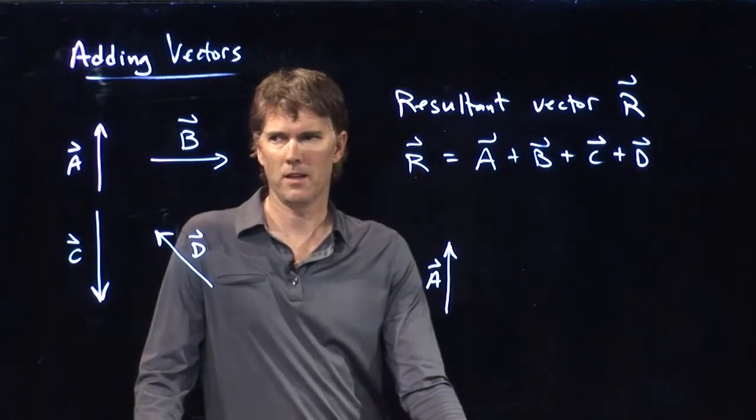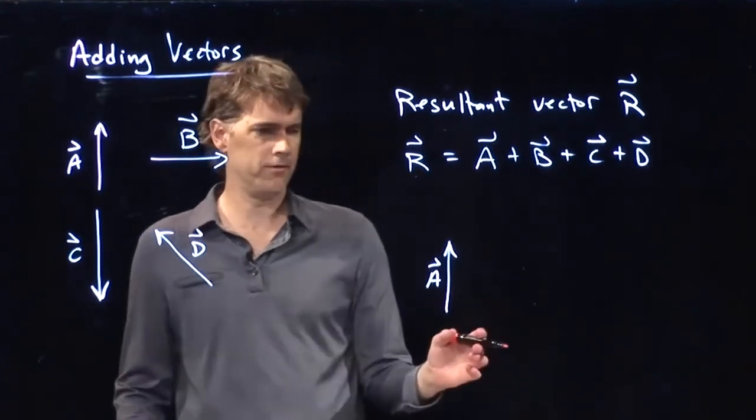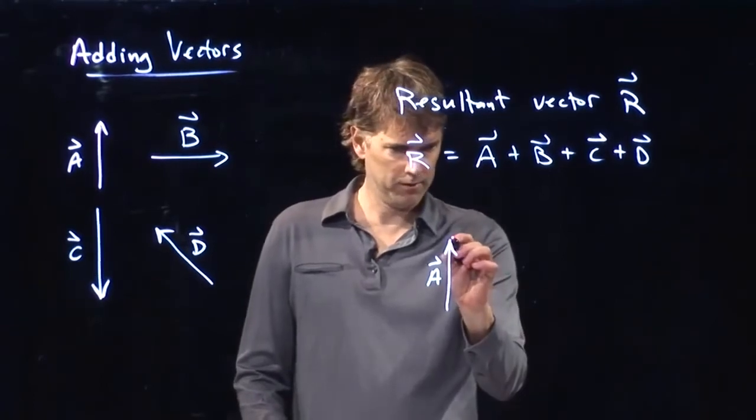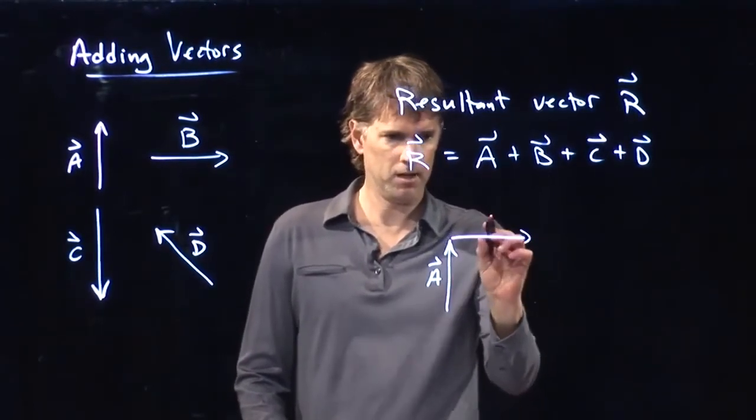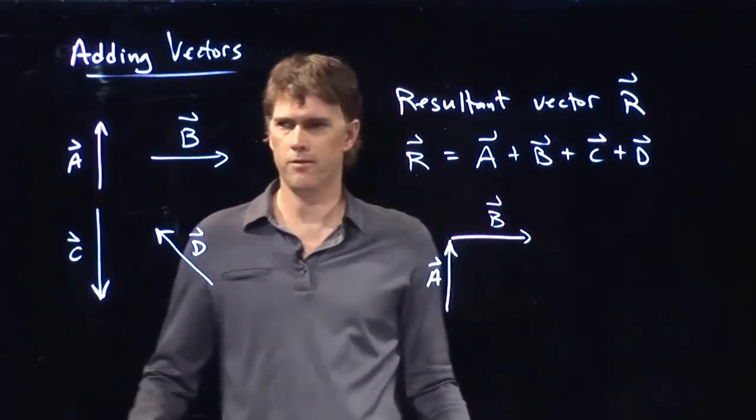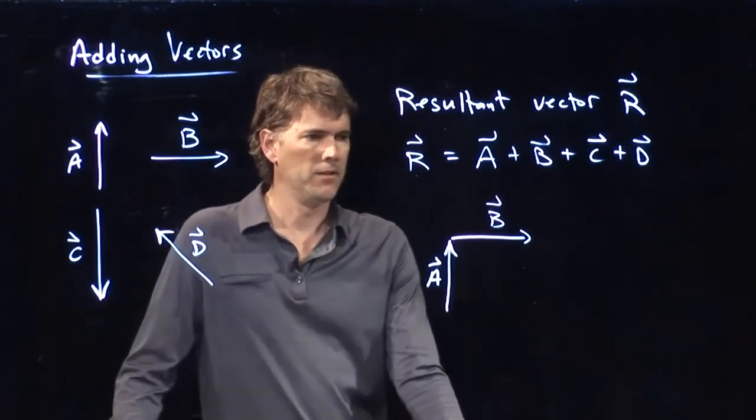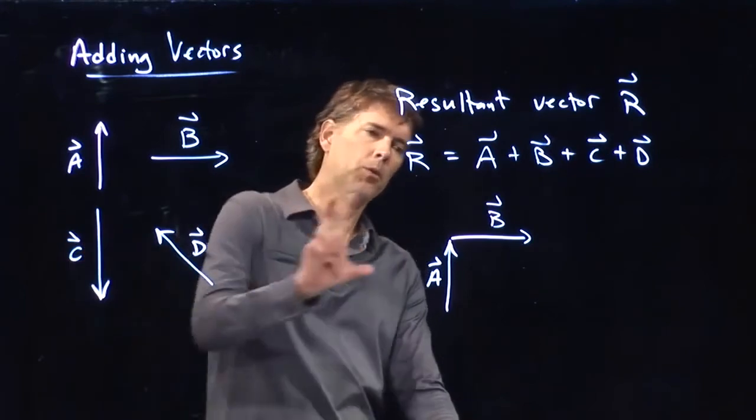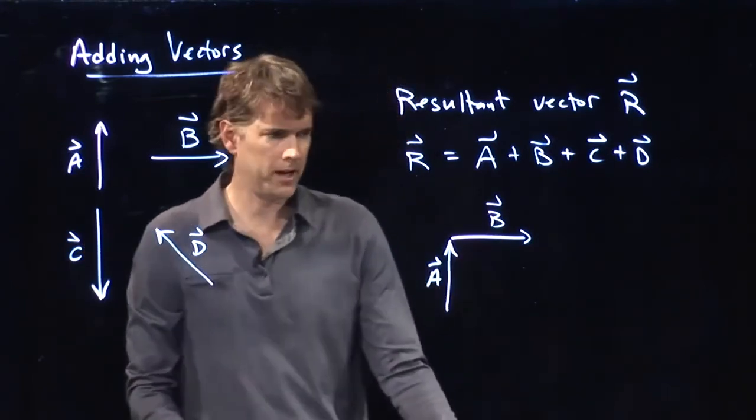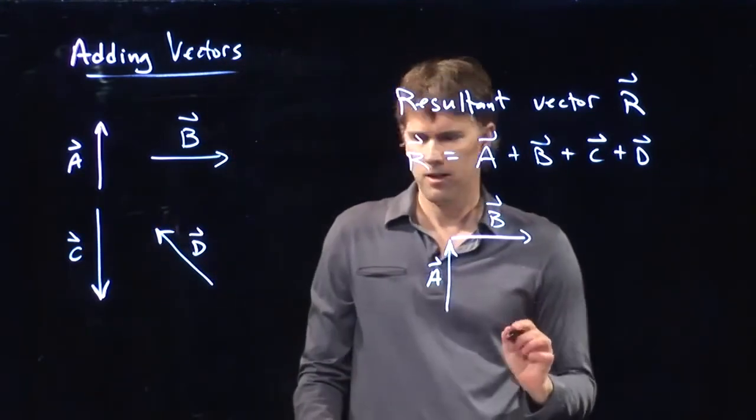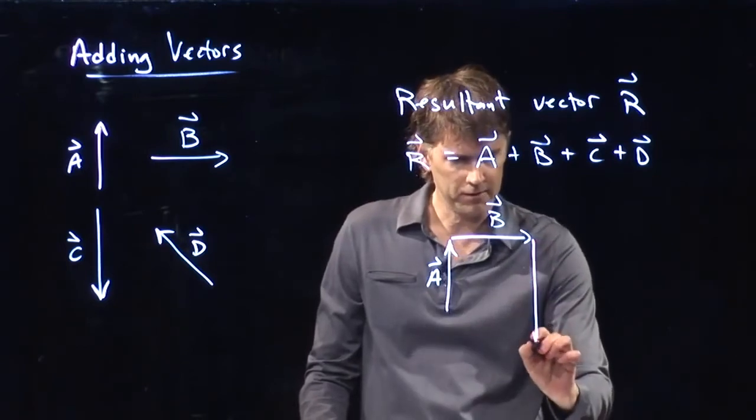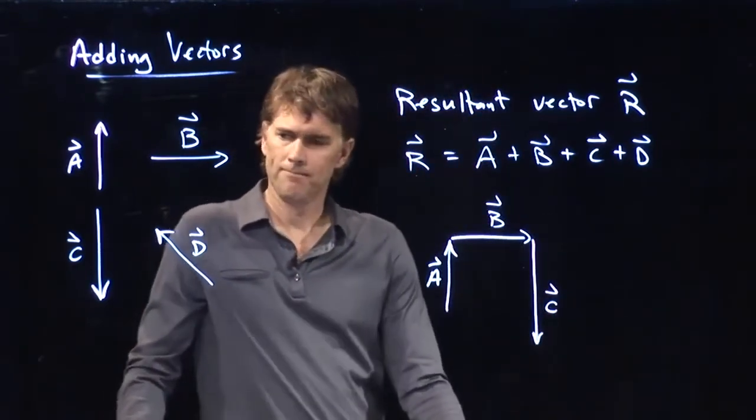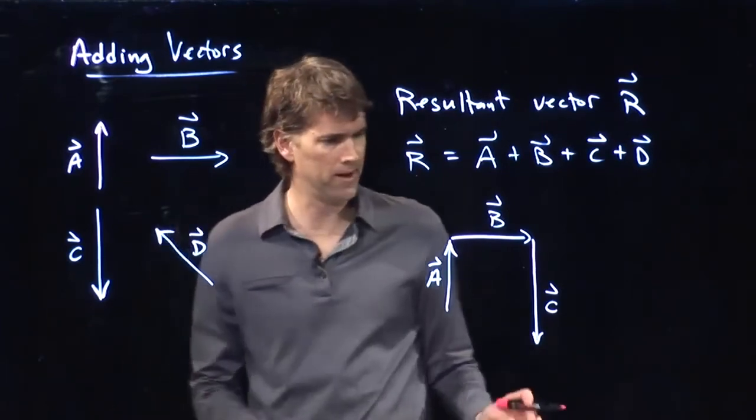And then I take the tail of the second vector and add it to the tip of the first vector. So there's the tail of B attached to the tip of A. And it's heading off to the right. And now we take the third vector and we move it into position such that it starts at the arrowhead and moves off in its particular direction. Roughly like that. And then we do the same with vector D.